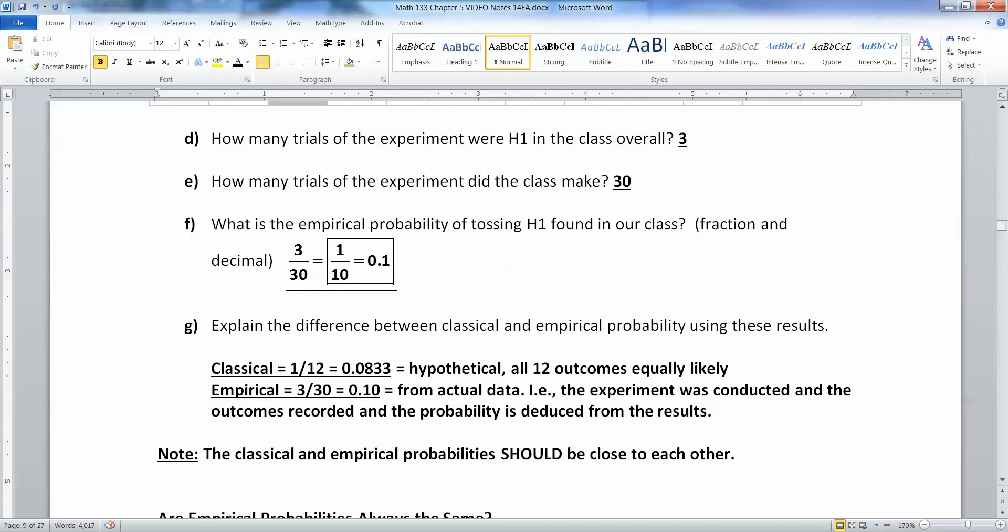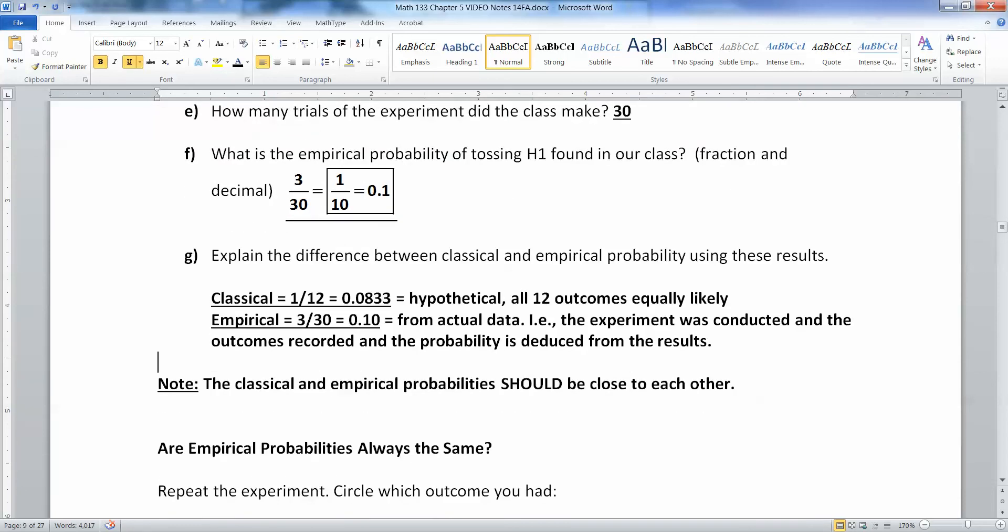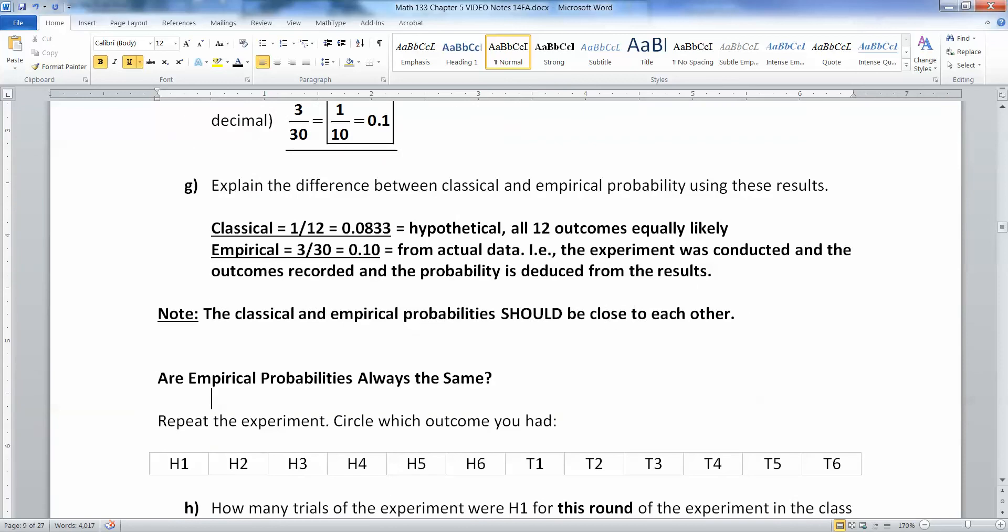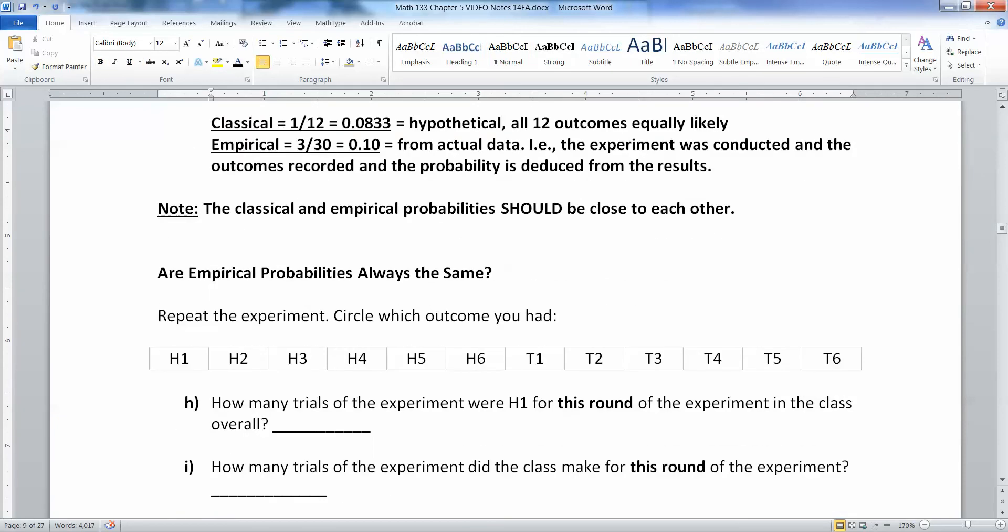So note, the classical and empirical probabilities should be close to each other. Now, how close? Well, it kind of depends on how many times you do it. If you do 30 times, not that close. But if you do 300, much closer, which gets us to the next part.